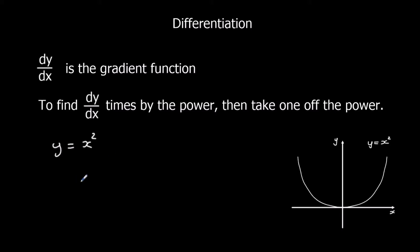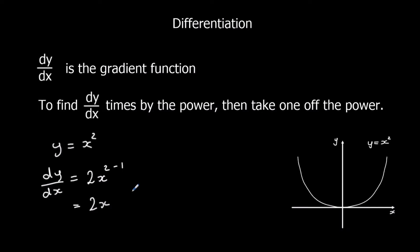The equation of the curve is y equals x squared. The gradient function is called dy/dx. To find dy/dx, we times by the power then take one off the power. The power is 2, so we multiply by 2: that gives us 2x squared, then we take one off the power — 2x to the power of 2 minus 1 is 2x to the power of 1, or just 2x. So dy/dx, the gradient function, is 2x.